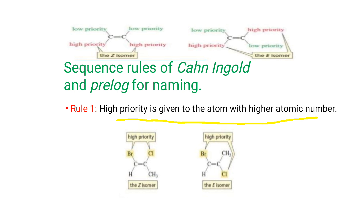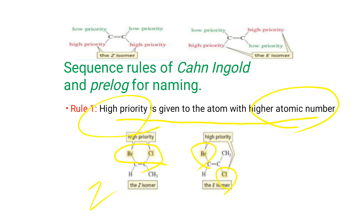For example, consider a compound with bromine, chlorine, hydrogen, and CH3 substituents. Bromine has the highest atomic number and therefore the highest priority, followed by chlorine. If these higher-priority groups — bromine and chlorine — are on the same side, it is a Z-isomer; if on opposite sides, it is an E-isomer.